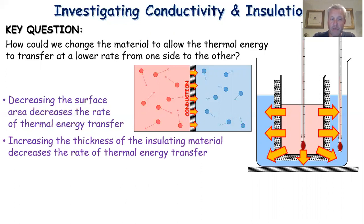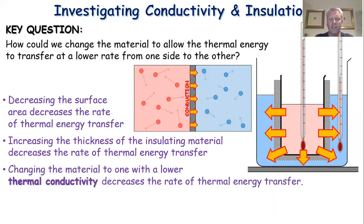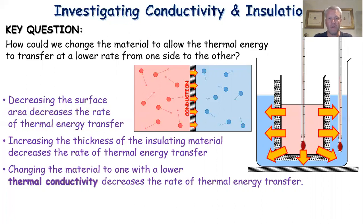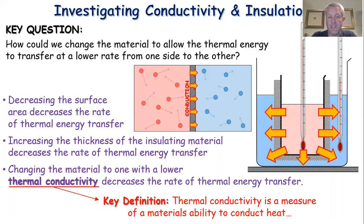If we increase the thickness of the insulating material we decrease the rate of thermal energy transfer, because there are more particles for the heat to travel through. We can also change to a material with a lower thermal conductivity - thermal conductivity is a measure of how easily heat energy passes through a material. Changing to a material with lower thermal conductivity means heat energy stays in one place rather than transferring to the cold place. The U-value is a number assigned to thermal conductivity: the lower the U-value, the lower the thermal conductivity, and the better insulator the material is.